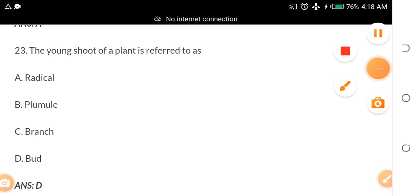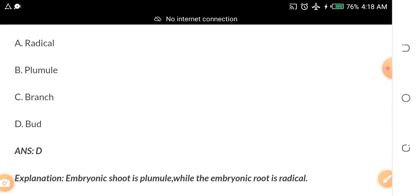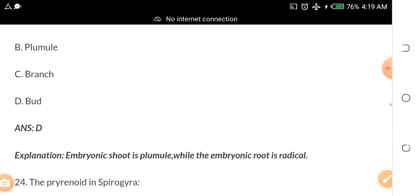The young shoot of a plant is referred to as A. Radicle, B. Plumule, C. Branch, D. Bud. The young shoot of a plant is called a bud. Embryonic shoot is plumule while the embryonic root is radicle.